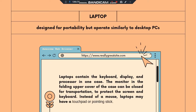Next is the laptop. Another type of computer is a laptop, designed for portability but operated similarly to desktop PCs. A laptop contains a keyboard, display, and processor in one case. The monitor in the folding upper cover of the case can be closed for transportation to protect the screen and keyboard.